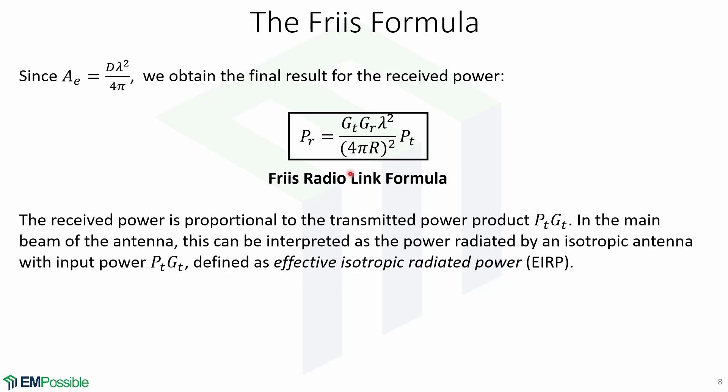Also, as it can be seen from the formula, the received power is proportional to the transmitted power product, pt times gt. In the main beam of the antenna, this can be interpreted as the power radiated by an isotropic antenna with input power pt times gt, and is defined as the effective isotropic radiated power, or EIRP.